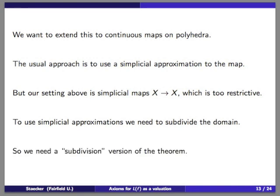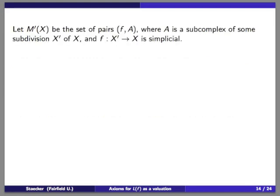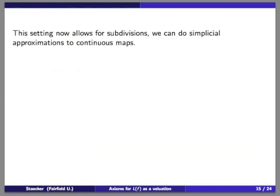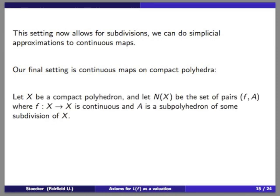It turns out it is no more difficult to prove a slightly more general subdivision version of the theorem. In this case, the domain for our invariant consists of pairs (f, A) where A is a subcomplex of some subdivision of X — not just subcomplexes of the given X. We still require f to be simplicial on this subdivision. The same theorem holds, and being specific about what c(f, x) means is not a problem. This setting allows us to do subdivisions and therefore simplicial approximations to continuous maps.